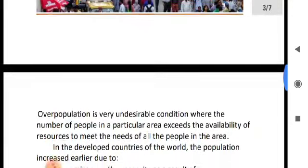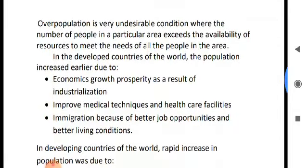What are the causes of overpopulation? Immigration is the most important cause of overpopulation. Next: increased birth rate, decreased death rate, better medical facilities, and lack of family planning. So there are many causes.